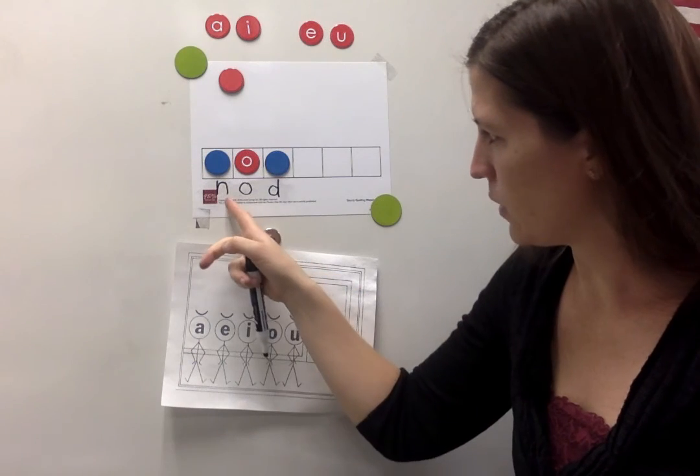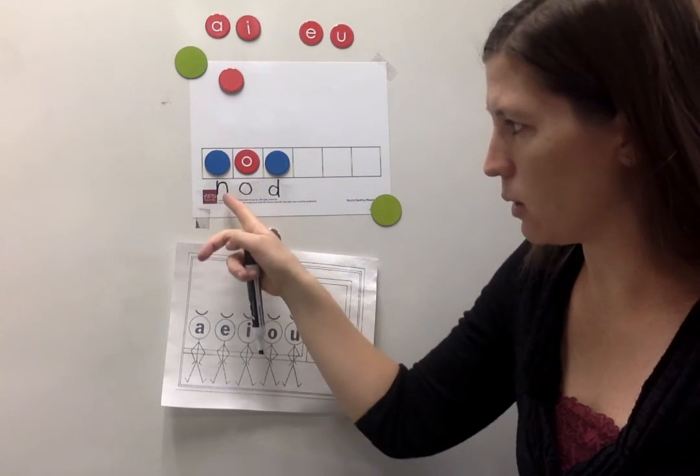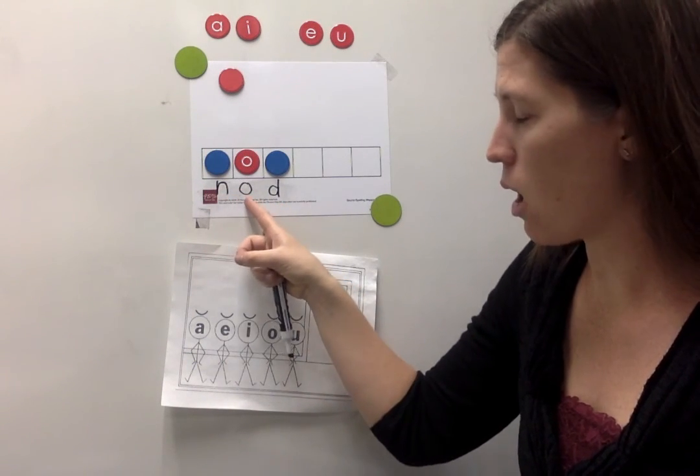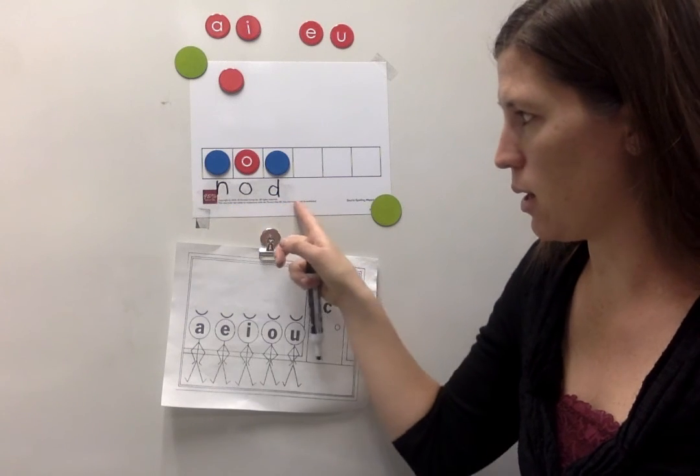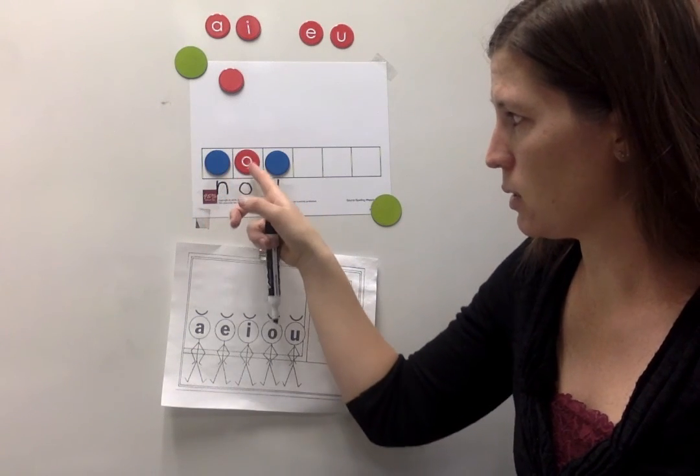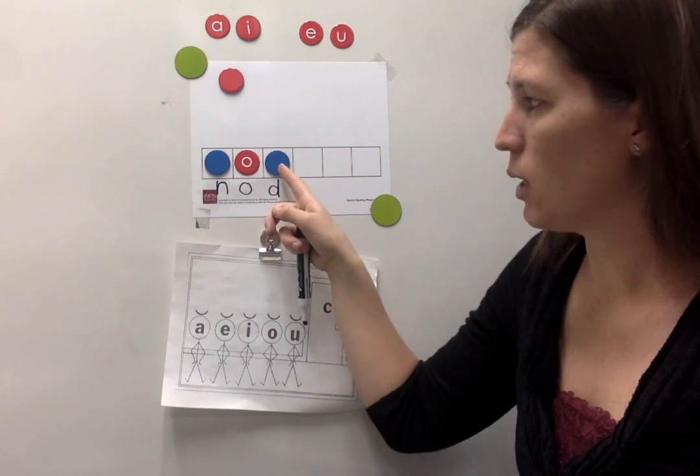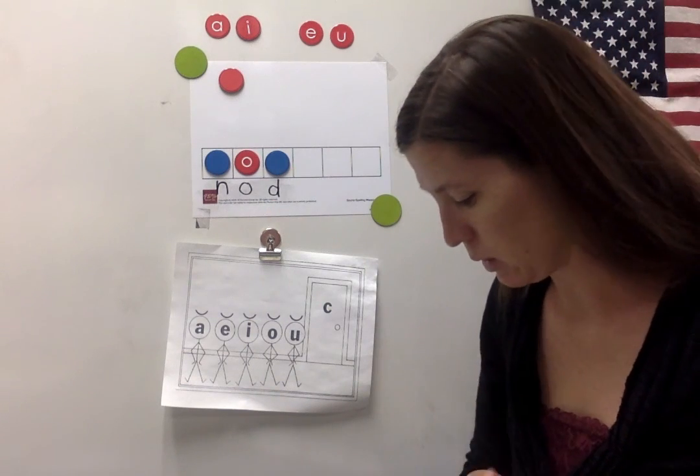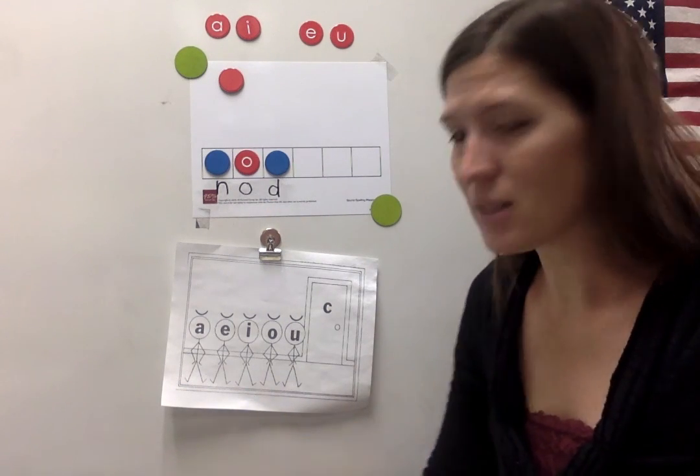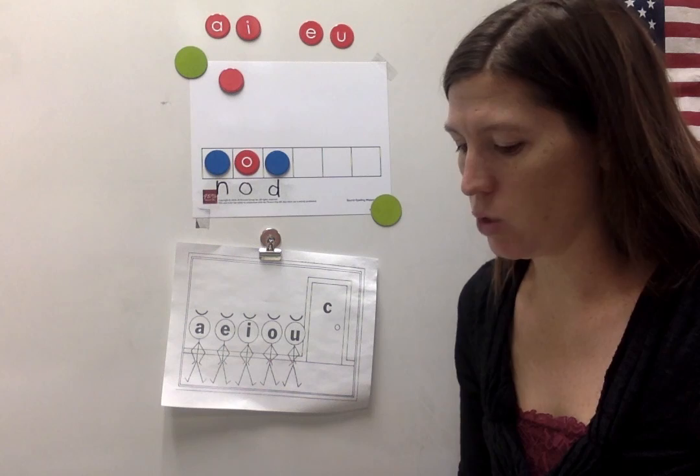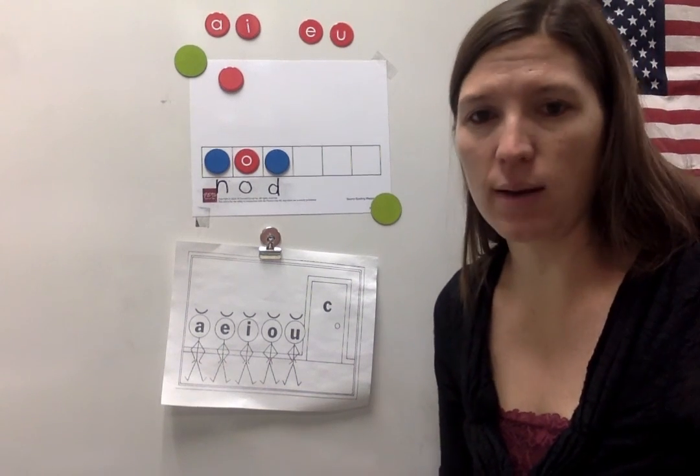So we wrote them. N-O-D. Nod. Let's stretch it out. N-O-D. Nod. A blue chip for N. A red chip for AH. And a blue chip for D. And that is our short O chip kit lesson.